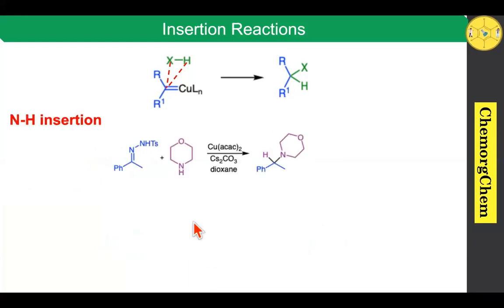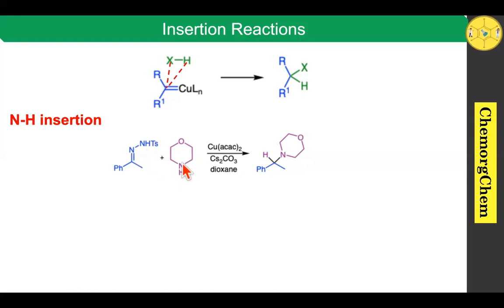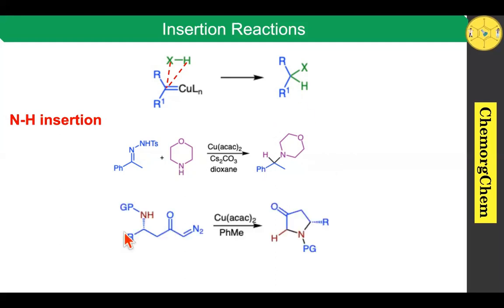Next, N–H insertion: when you take the hydrazone derivative with cesium carbonate, it readily produces the corresponding diazo compound in situ. After formation of the diazo compound, it reacts with copper acetylacetonate to produce the copper carbene; after formation of the copper carbene, it reacts with a secondary amine — the carbene inserts into the N–H bond to produce the corresponding product. Just like the intermolecular version, the intramolecular version is also possible.